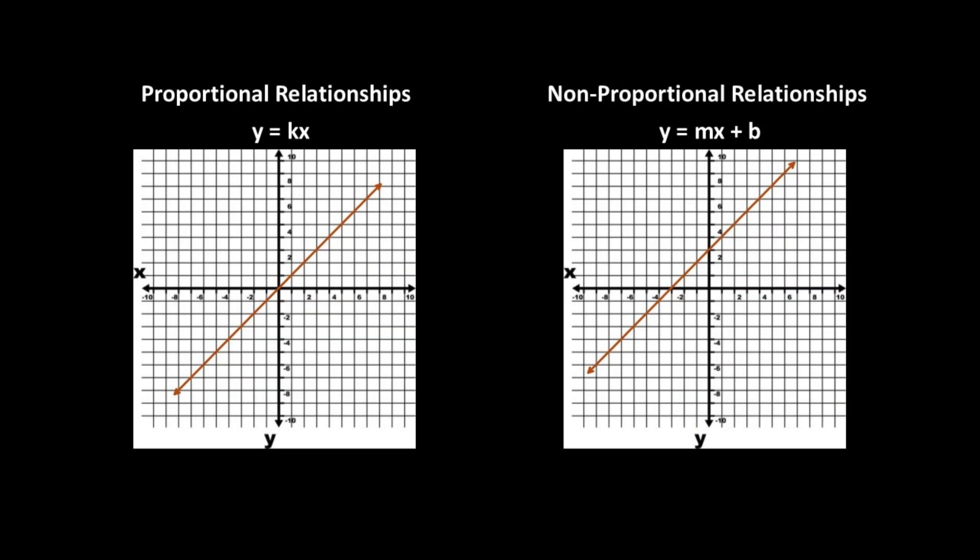The graph for a proportional relationship is linear and goes through the origin, as seen with the graph on the left, and the equation will be in the form y equals kx. The graphs of nonproportional relationships will not pass through the origin and the equations will be in the form y equals mx plus b, and we will address these relationships in another video.